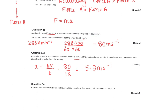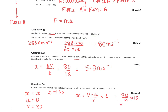Question 3c: show the minimum distance is 600 metres. This requires a SUVAT equation. Writing down what we know: initial velocity u equals 0, final velocity v equals 80, time t equals 15 seconds. The appropriate equation is x equals (v plus u) divided by 2, times t. Substituting in: (80 plus 0) divided by 2, times 15, gives x equals 600 metres.